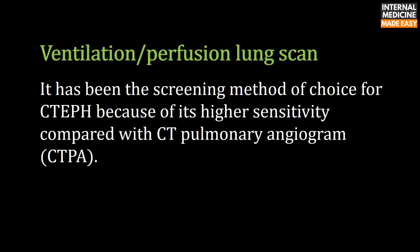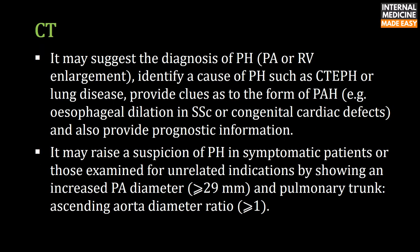Ventilation-perfusion lung scan is the screening method of choice for chronic thromboembolic pulmonary hypertension due to its higher sensitivity compared with CT pulmonary angiogram. CT may suggest the diagnosis, identify a cause such as CTEPH or lung disease, provide clues as to the form of PAH (e.g., esophageal dilation in systemic sclerosis or congenital cardiac defects), and provide prognostic information.